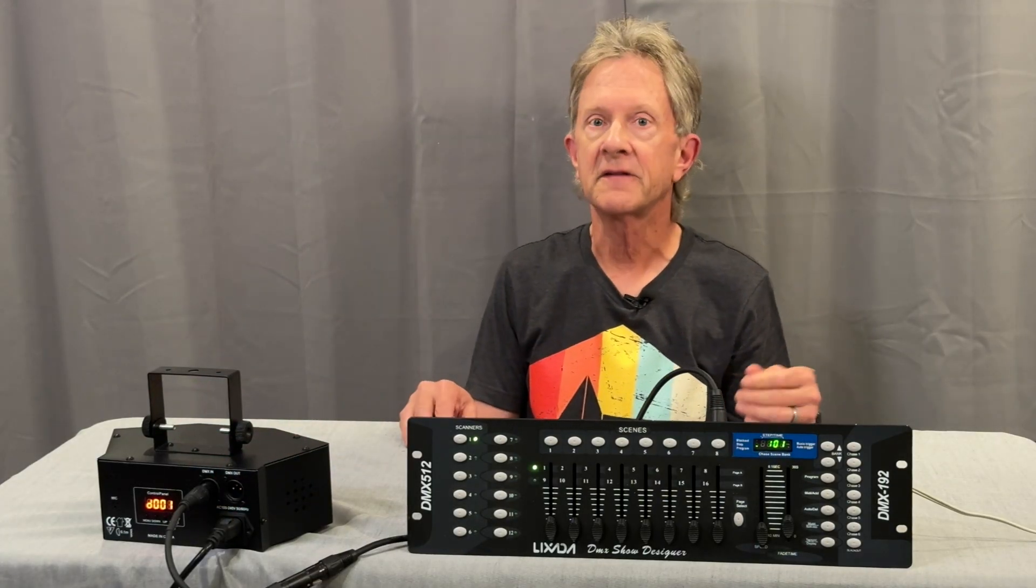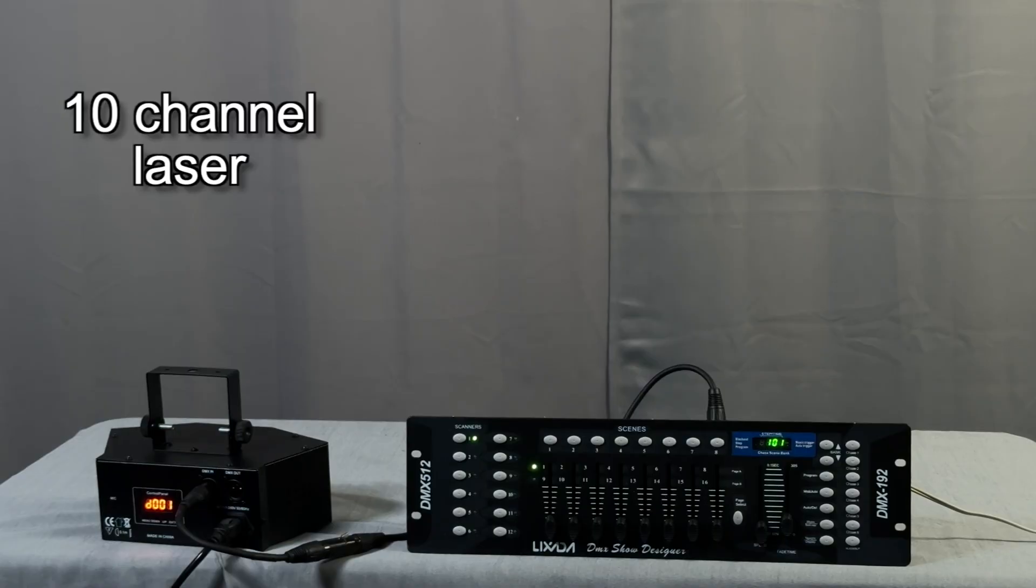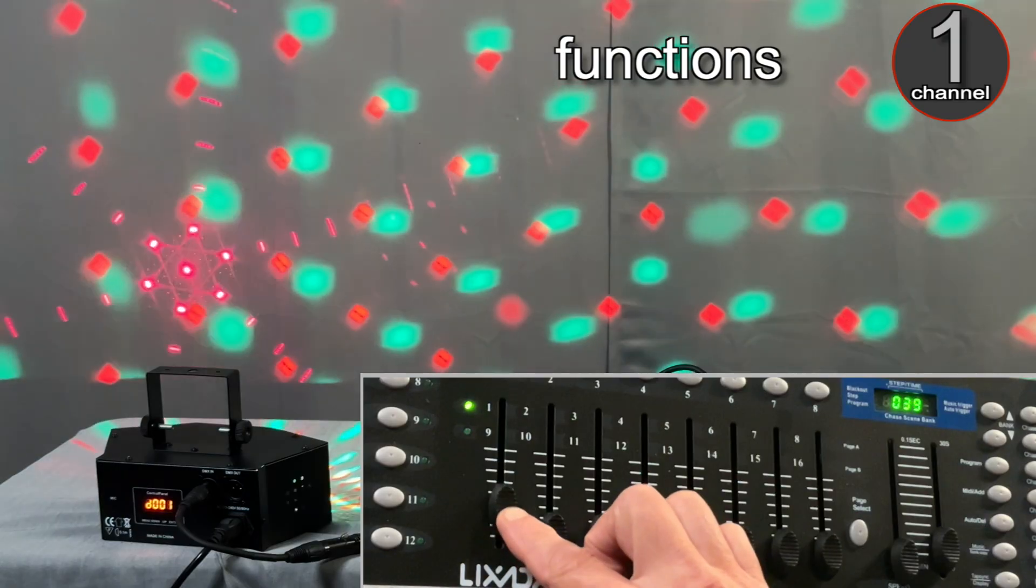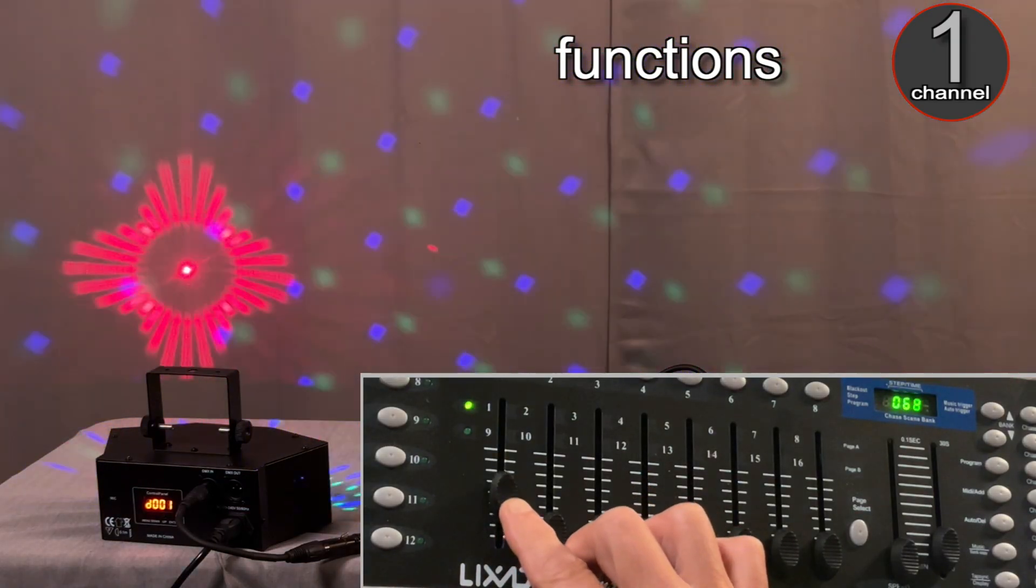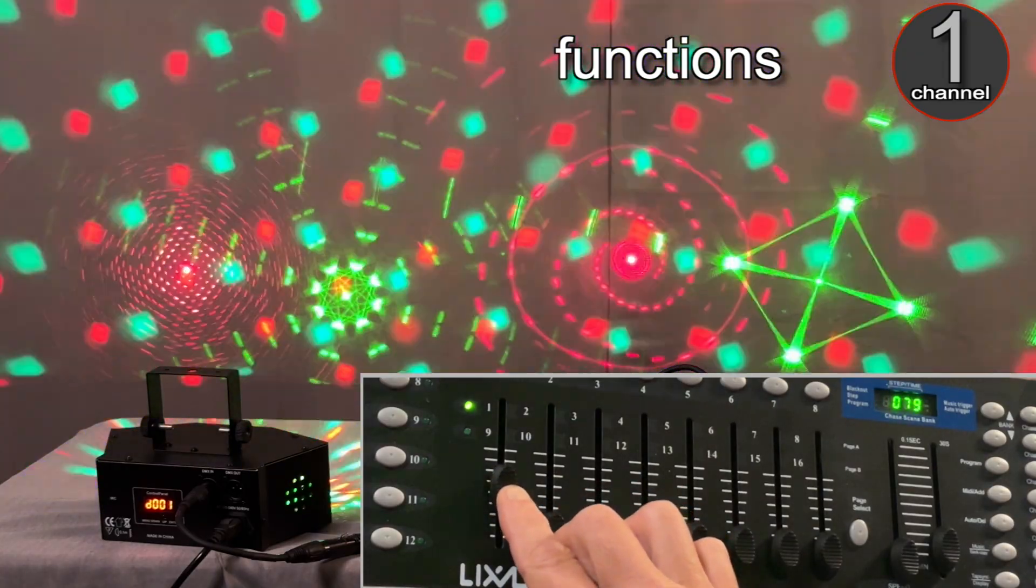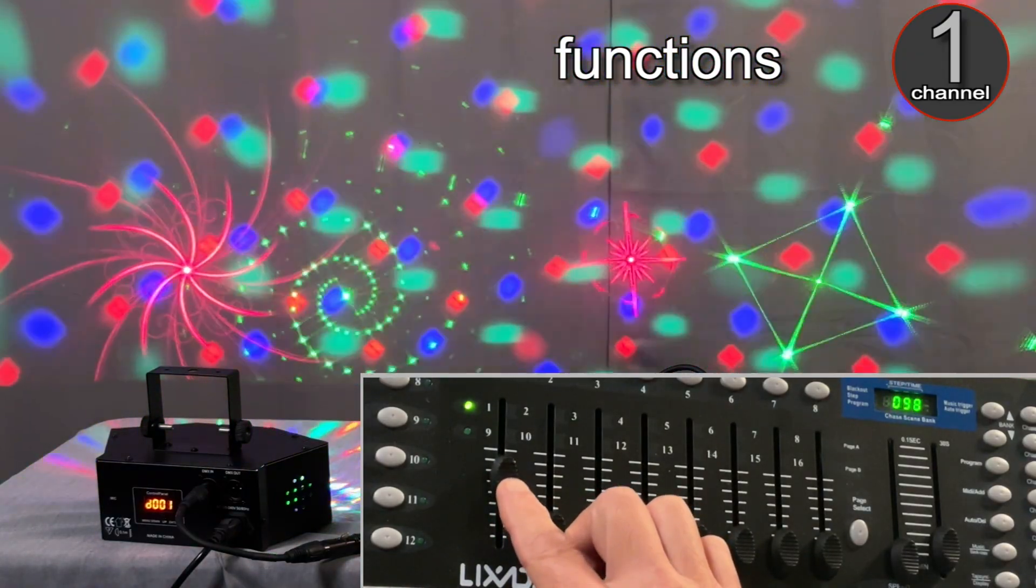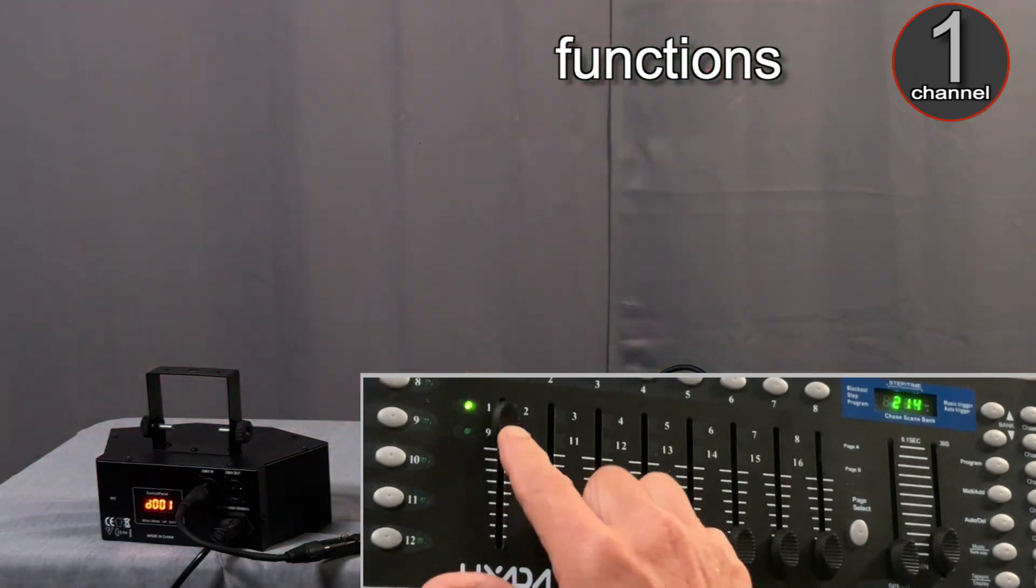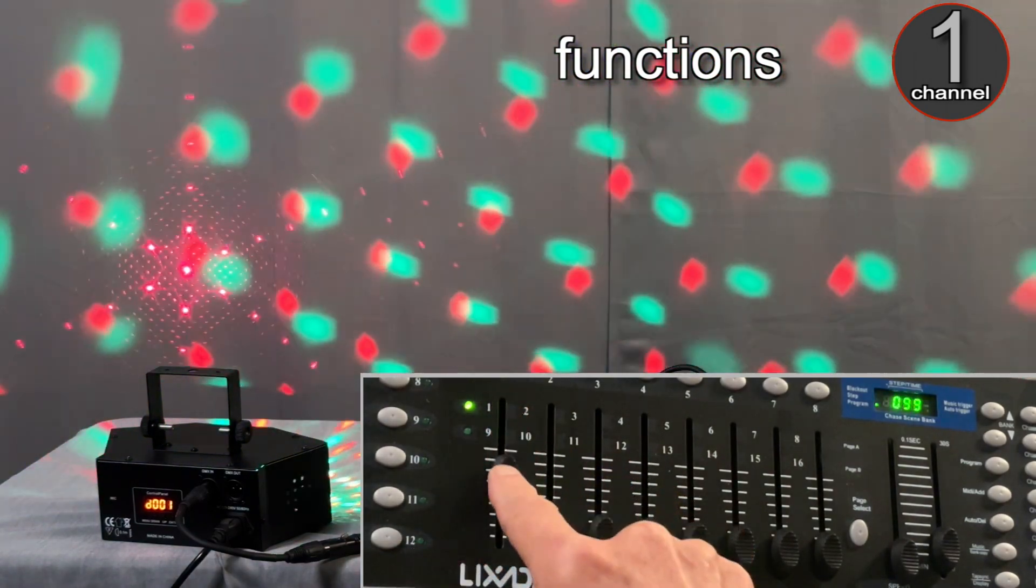And now we're all set up. This is a 10 channel laser. On channel 1 you can access each one of the 5 auto functions, as well as the sound active modes, and also the flash function. And you can turn the light off here.